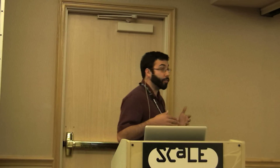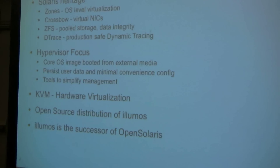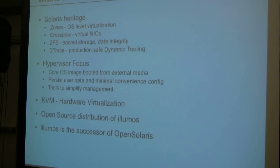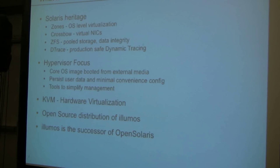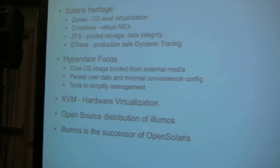We have Crossbow, which is a facility for basically doing virtual networking, adding virtual NICs, and letting you do a lot of flow control and work on a per-NIC basis. We have ZFS, which most people have heard of — you get the notions of pooled storage, which is pretty important, and data integrity. And we also have DTrace, which is basically a way of doing dynamic tracing guaranteed to be safe for production.